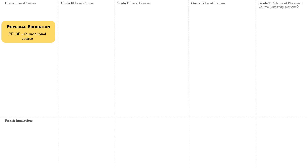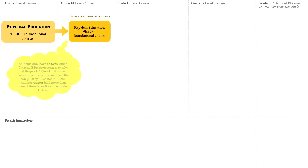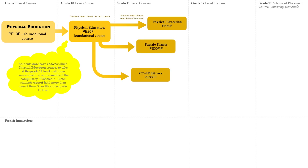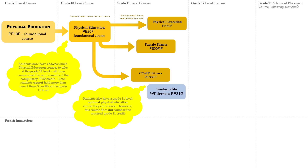Physical Education is a core subject for graduation that starts in Grade 9, then a mandatory course in Grade 10. Students now have choices as to which physical education courses to take at the Grade 11 level. All three courses meet the requirements of the compulsory phys ed credit. Note students cannot hold more than one of these three credits at the Grade 11 level. Students also have Grade 11 level optional phys ed courses; however, this course does not count as the required Grade 11 credit.